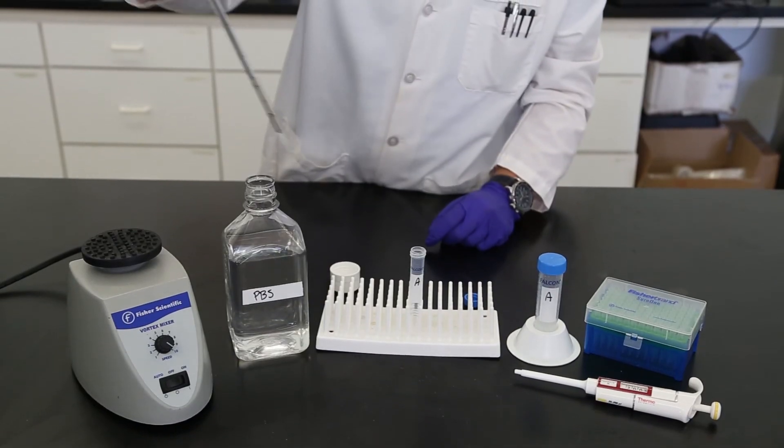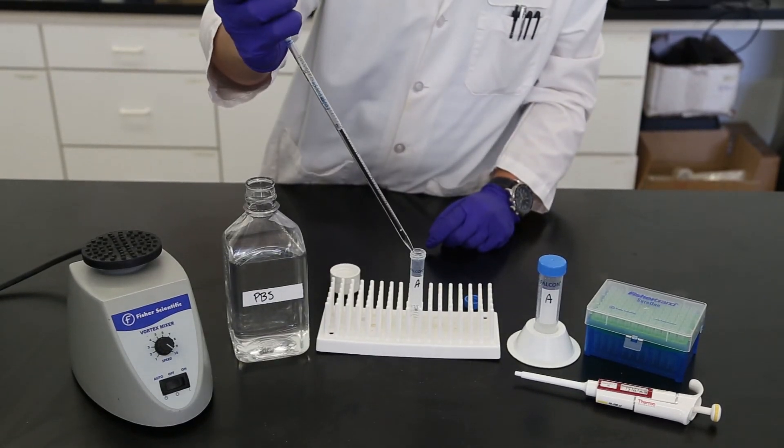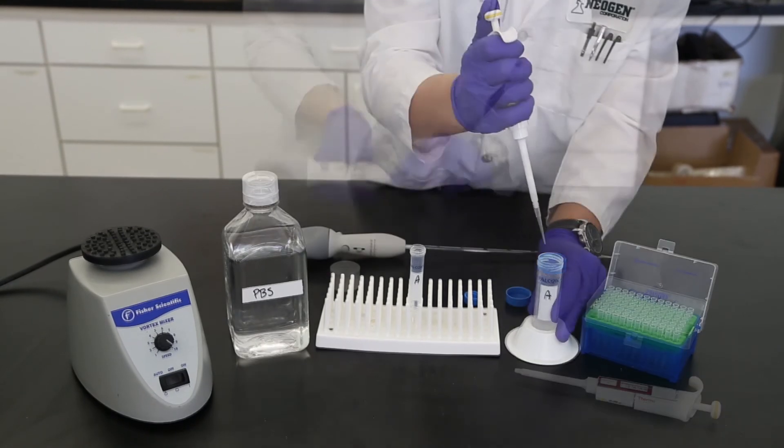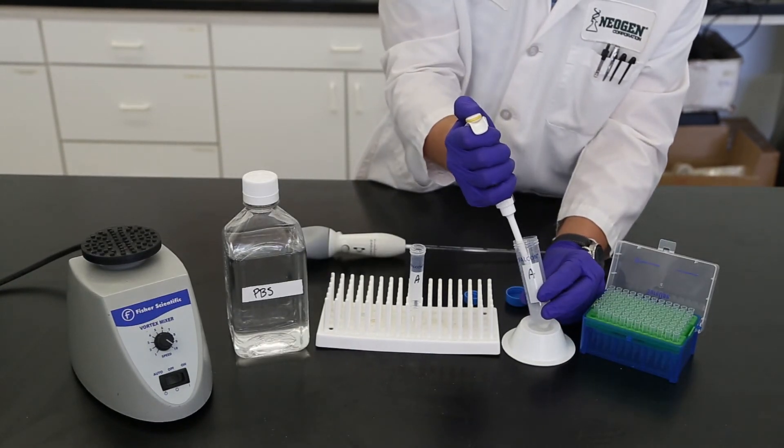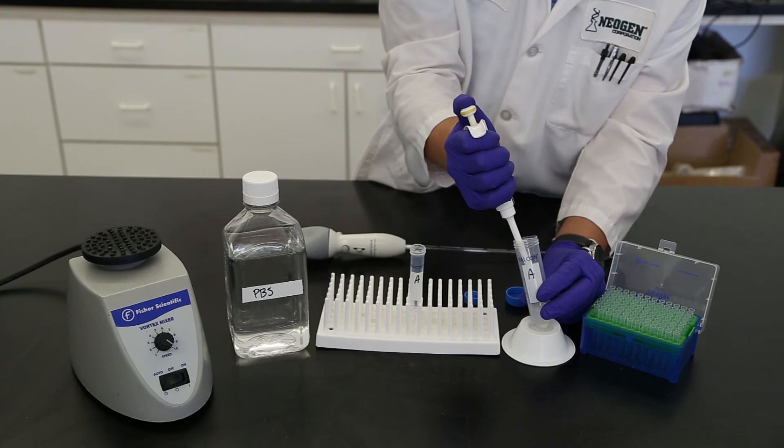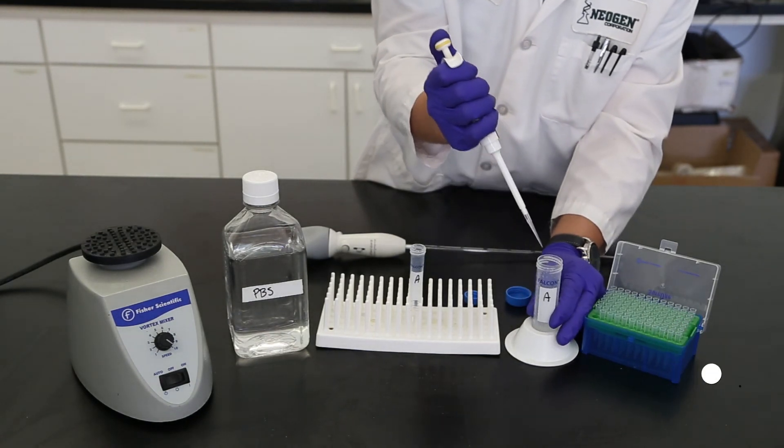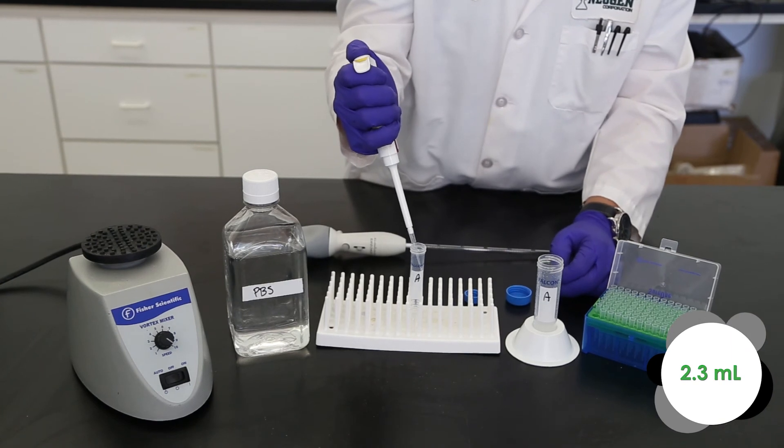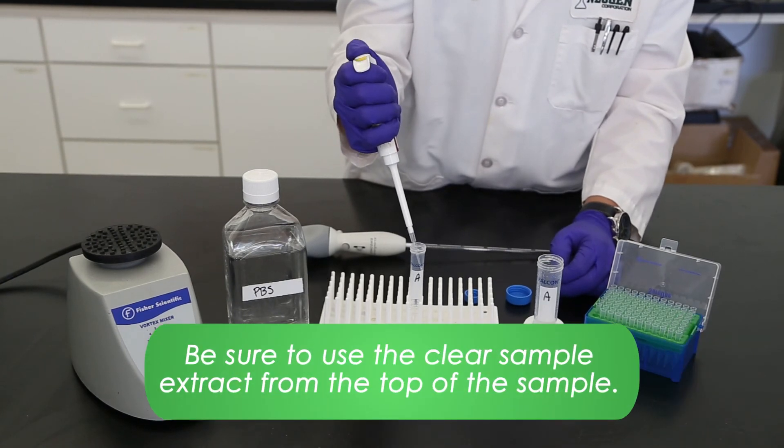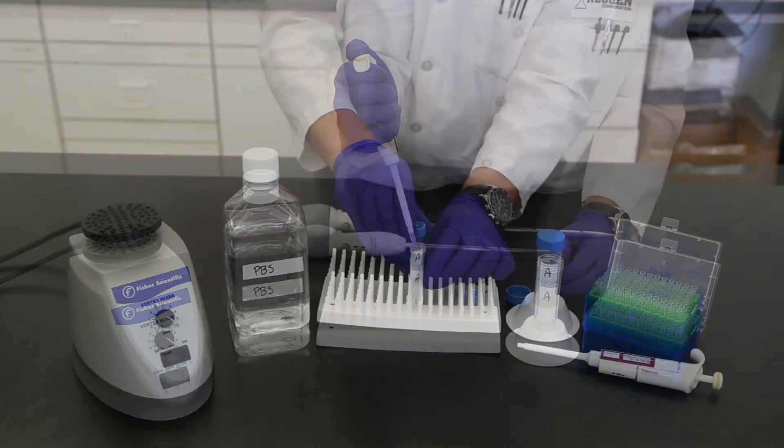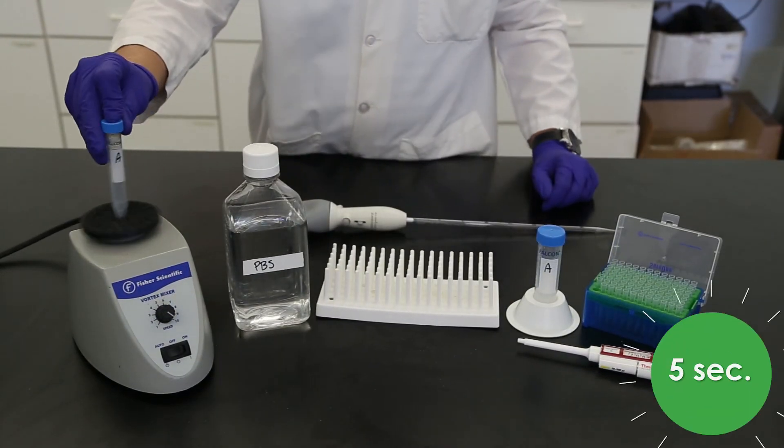Sample extracts must be diluted. Using a clean 10 cc tube dilute your sample 1 to 12.5. For example, combine 200 microliters of sample with 2.3 milliliters of PBS. Mix by vortexing for 5 seconds.